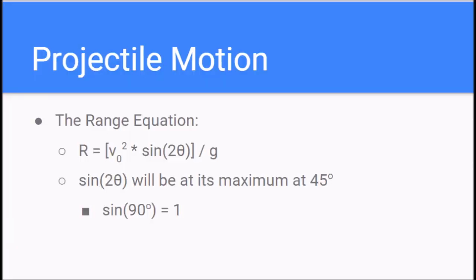This results from the horizontal range equation. The range equation can be derived using the kinematics equation in the x and y directions. Notice that sine of 2 theta will be greatest when 2 theta equals 90 degrees.